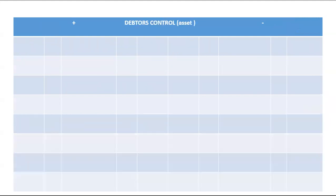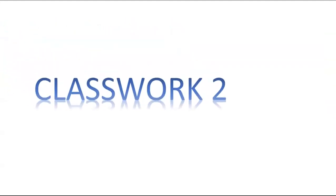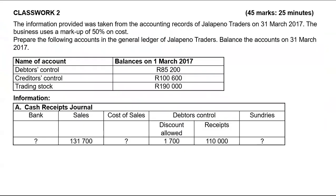Please check out the next video for classwork 2. You need to prepare your debtors control account, creditors control account, and your trading stock account. Note that you are given a markup of 50 percent, that is 50 percent on cost.